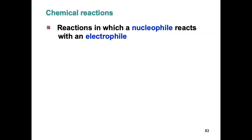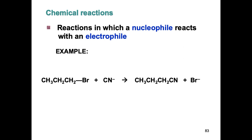The definition of chemical reactions is reactions in which a nucleophile reacts with an electrophile. Remember that the electron-deficient species is the electrophile, so our carbon is an electrophilic carbon, while a negatively charged species is a nucleophile.